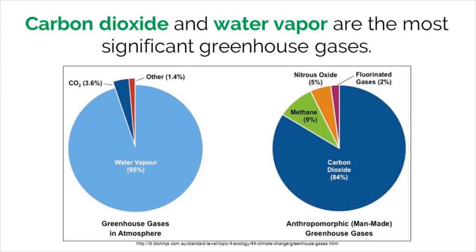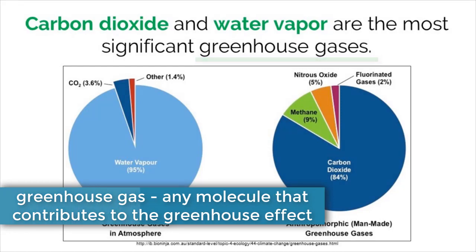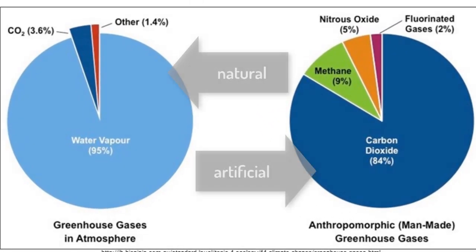To understand climate change, we first need to understand the concept of a greenhouse gas. A greenhouse gas is any type of molecule that has the ability to contribute to the greenhouse effect. These molecules have the ability to absorb radiation or heat from the sun and hold it in our atmosphere. Because they are absorbing heat and not allowing it to leave, our earth gets warmer.